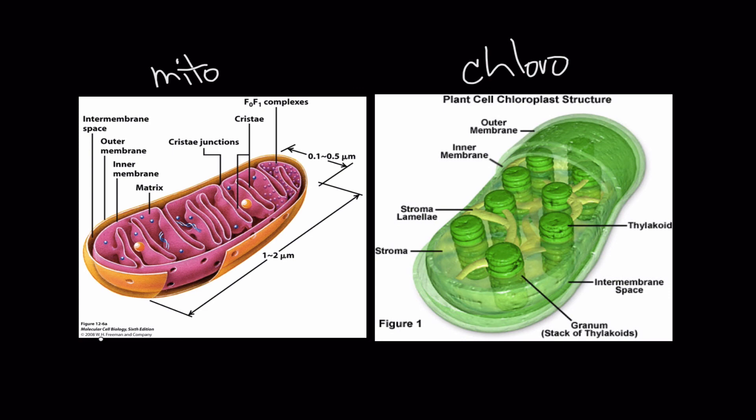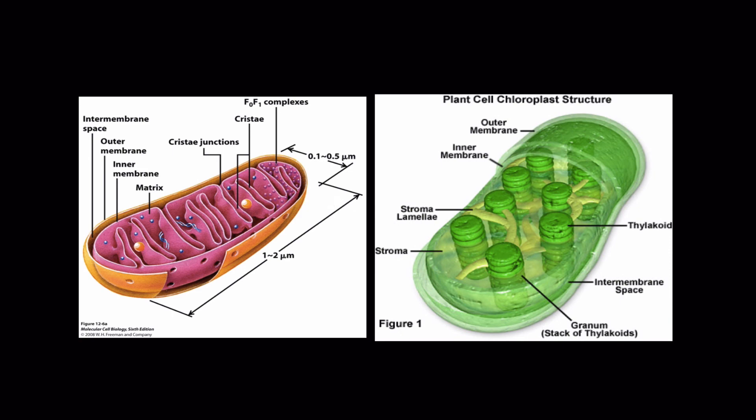But remember chloroplasts are receiving solar energy or light energy and converting it into chemical energy. Mitochondria are taking in one form of chemical energy and converting it into another form of chemical energy. So that's the job of these two very important organelles. We're going to stop there and pick up in our next video cast with the rest of our tour of the cell.